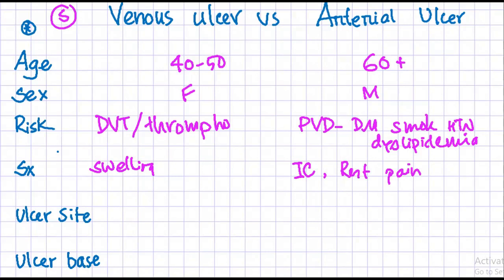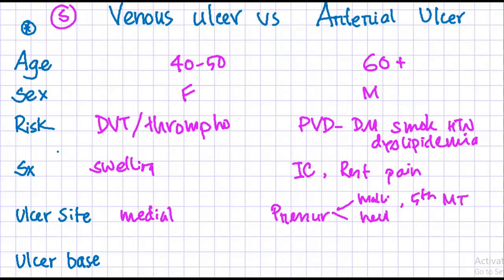The site of a venous ulcer is usually in the distribution of the leg veins, such as over the medial malleolus. In the case of arterial ulcers, the pressure areas are the common sites, such as the malleoli, the heel, and the metatarsals — including the fifth metatarsal base or the head of the metatarsal.